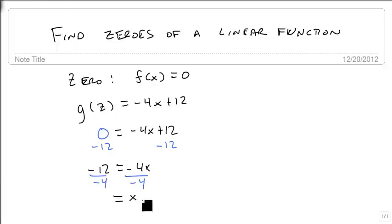So we keep our equal sign the same, and negative 12 divided by negative 4 is positive 3. And we usually like to rewrite that as x equals 3. So the zero of this function is x equals 3, and we have a point at 3, 0, as well as f of 3 equals 0. These are different ways of writing the zero.